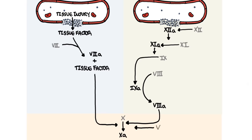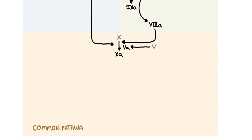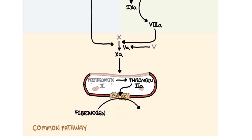Factor 10a and factor 5a make up the beginning of the common pathway. Factor 10a, with factor 5a as a cofactor, activates prothrombin to become thrombin, which is factor 2a — the active form. Thrombin then converts fibrinogen to fibrin, which is factor 1a. Local generation of fibrin enmeshes and reinforces the platelet plug formed from primary hemostasis, successfully stopping bleeding.